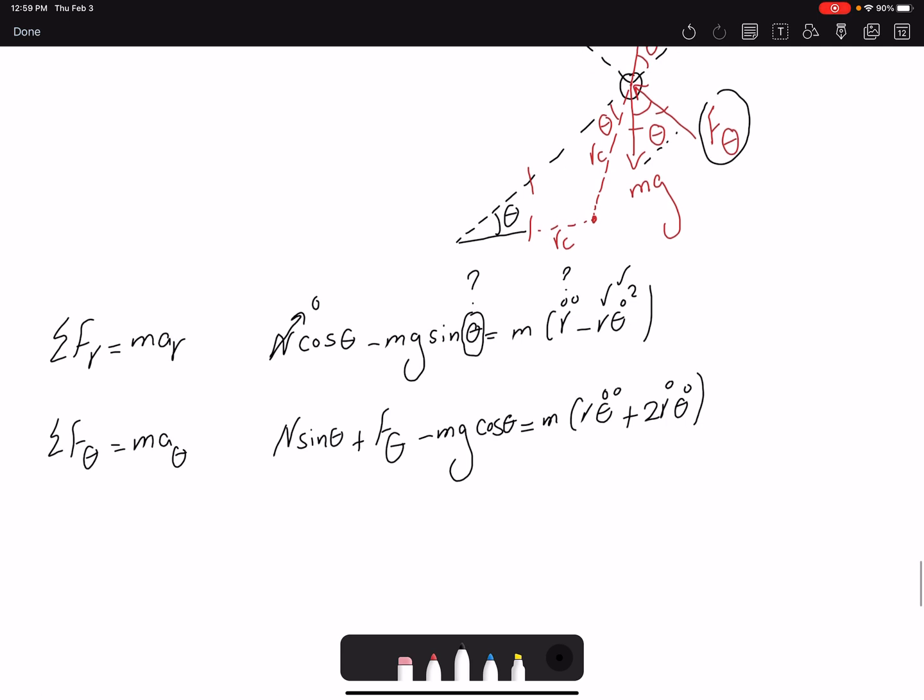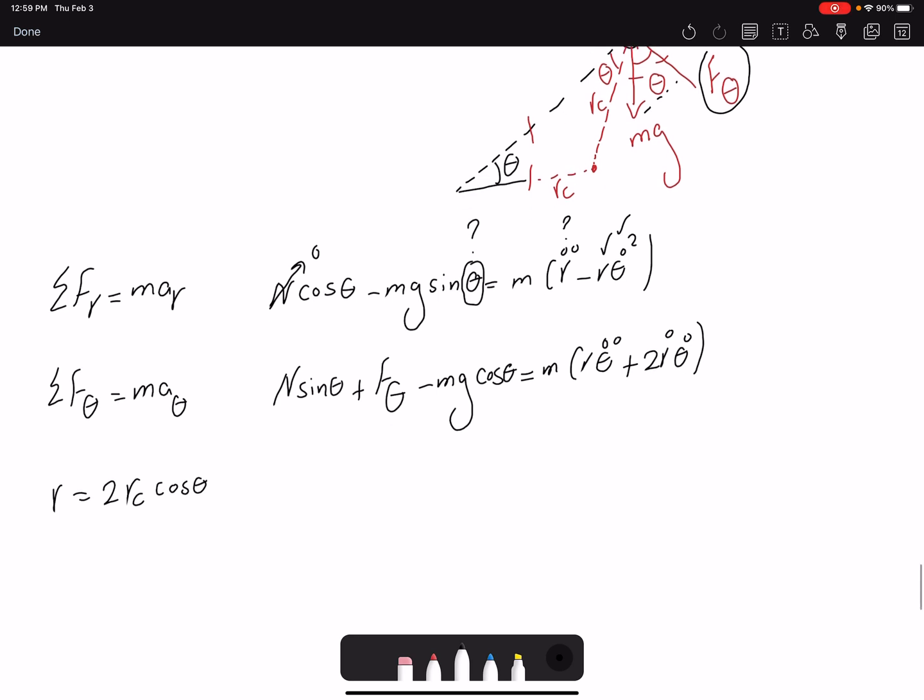So we know what R is, but we need to find R double dot. So R is 2Rc cosine theta. R dot is dr over dt. But this is function of theta. So I have to use the chain rule. This would be theta dot. So I get negative 2Rc sine theta theta dot.